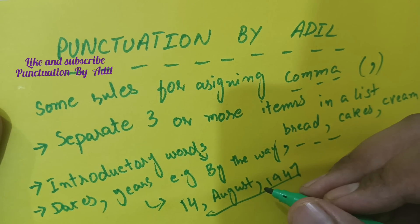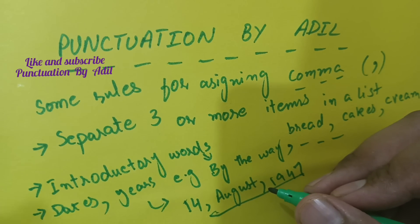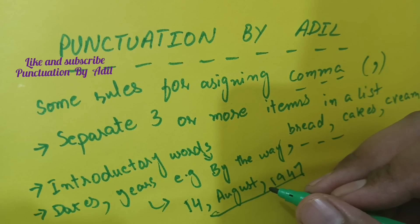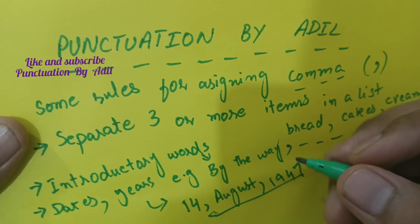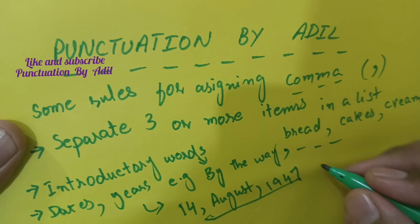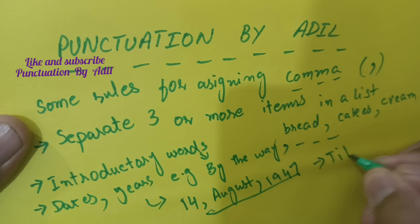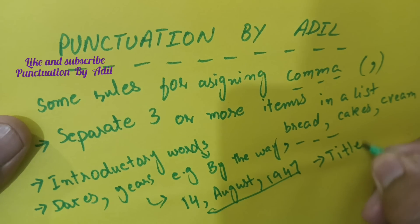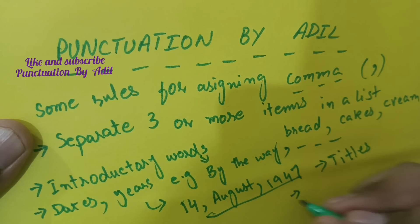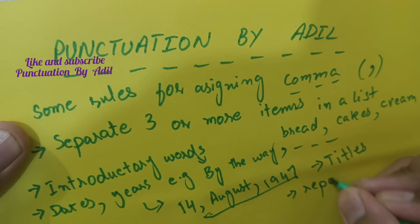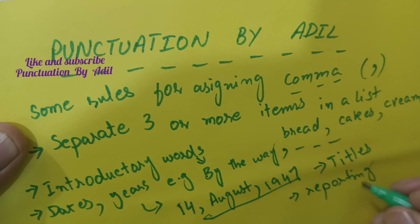Another rule for using a comma is that it is used to separate titles. For example, you could say 'Quaid-e-Azam.' A comma is also used for a reporting clause.